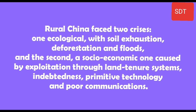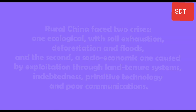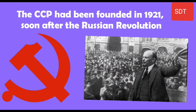Rural China faced two crises: first, an ecological crisis with soil exhaustion, deforestation and floods; and second, a socio-economic crisis caused by exploitation through land tenure systems. The CCP had been founded in 1921, soon after the Russian Revolution. The success of the Russian Revolution had a powerful influence around the world.